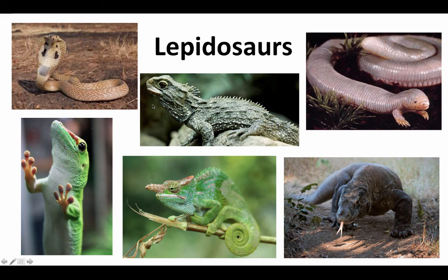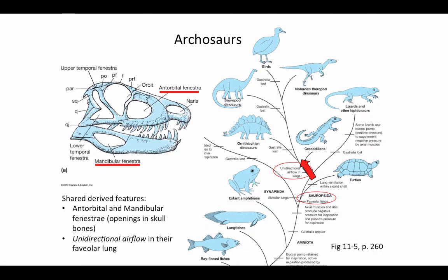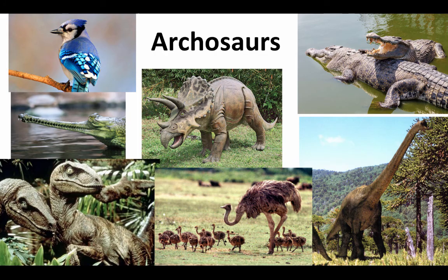Here are some examples of lepidosaurs — different snakes and lizards — and this is the tuatara in the middle, which looks mostly like a lizard but has some specialized features we'll talk about later. The archosaurs are distinguished by some features of the skull: they have a couple of holes called fenestrae (fenestra is singular, literally meaning 'window') — one in front of their orbit and another in the middle of their jaw. They're also characterized by unidirectional airflow in a special kind of lung called a faveolar lung. Here are examples of archosaurs: our feathered friends the birds, our extinct friends the dinosaurs, and all of the crocodilians such as the gharial and American alligator.